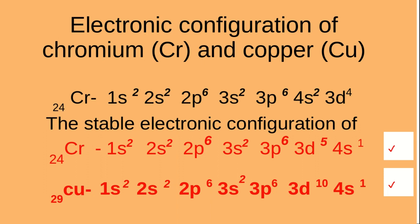In copper, atomic number 29, the electronic configuration is 1S2, 2S2, 2P6, 3S2, 3P6, 3D10, and 4S1.